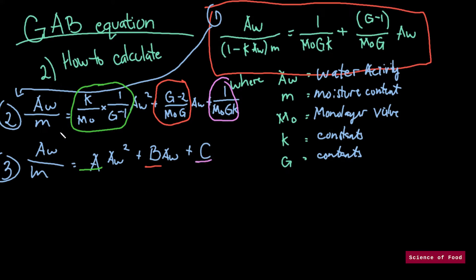So what we can do to have or to get the values for A, B, and C, we can plot this equation where water activity is the x value and water activity over moisture is the y value. What you want to have is a second degree polynomial graph so that you can have the three variables, the A, B, and C. And we'll get to it later when we go to the example.